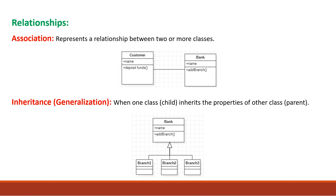Another relationship is generalization or inheritance. In a generalization relationship, one class has subdivisions into one or more classes. As shown in the example below, bank is the main or parent class, which is divided into three subclasses: branch one, branch two, and branch three. All three classes can be called child classes of bank. They all have some properties which the bank class has.